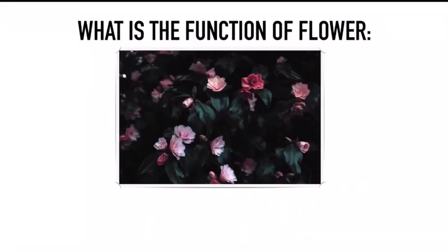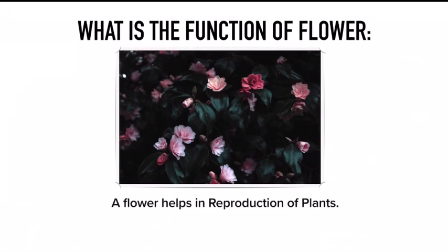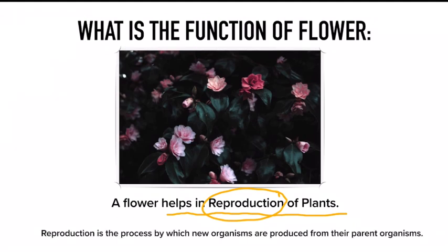Before studying the parts of a flower, let's understand its function. A flower basically helps in reproduction of plants. Reproduction is a process by which new organisms are produced from their parent organisms — for example, how humans give birth to babies, or a hen gives birth to chicks. Similarly, plants give birth to new plants, and flowers help them do this.